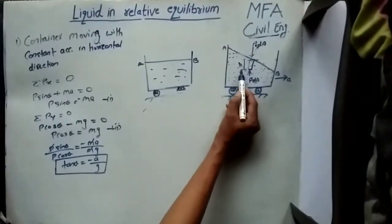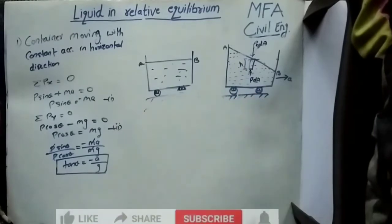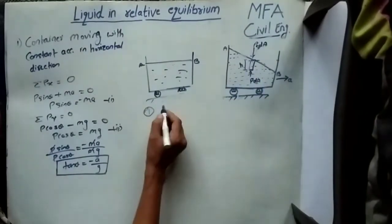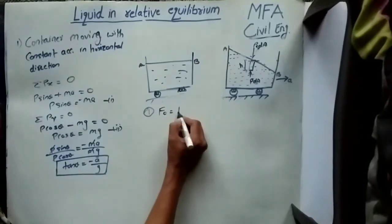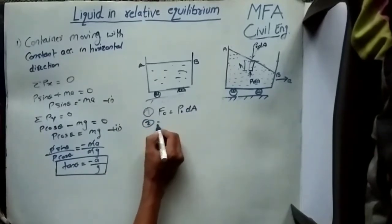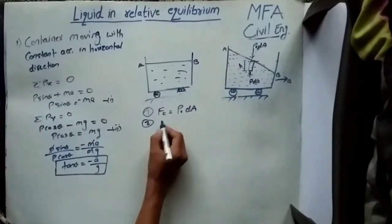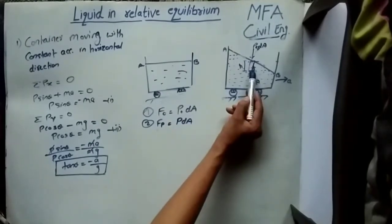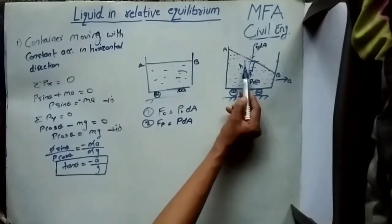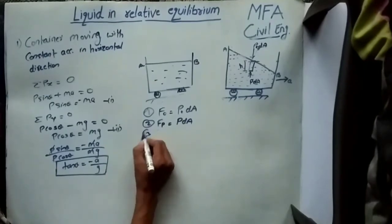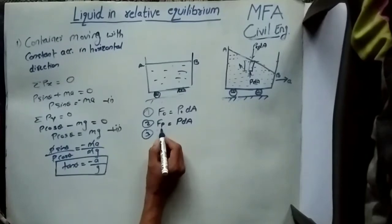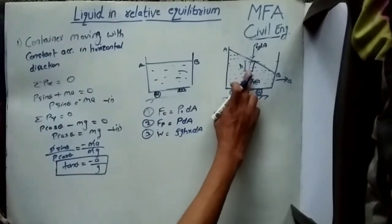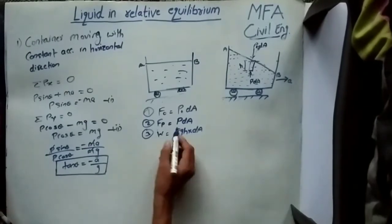Now let's find the expression for the pressure at any point in the final position of the liquid. Consider a small element of height H and cross-sectional area dA. The forces acting on this fluid element are: first, the atmospheric pressure force P₀ acting on the top, equal to P₀ × dA; second, the pressure force exerted by the fluid acting vertically upward, equal to P × dA; and third, the weight of the element acting vertically downward, equal to ρgH × dA. Pressure forces on the left and right sides cancel each other.